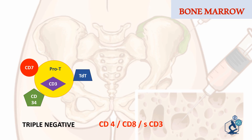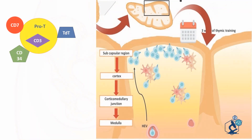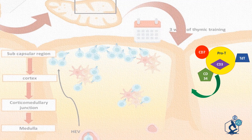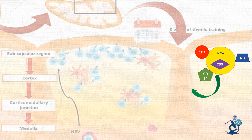Pro T cells are referred to as triple negative cells due to lack of expression of CD4, CD8, and surface CD3. Further differentiation occurs in the thymic cortex through several stages. Pro T cells travel through the bloodstream to reach the subcapsular region of the thymic cortex and mature into pre T cells.